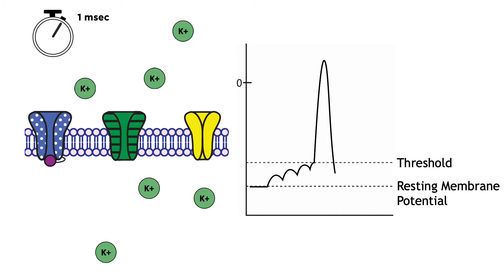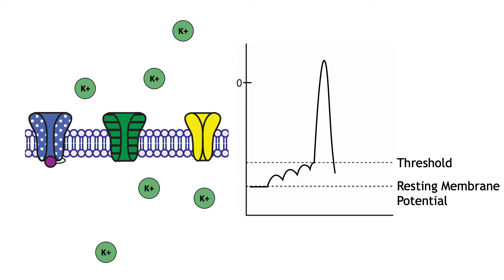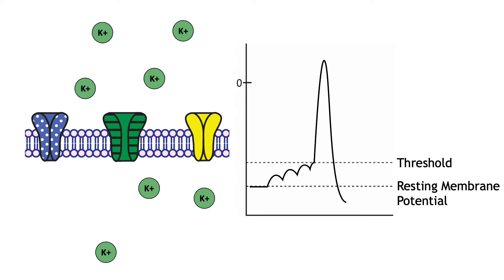Like the voltage-gated sodium channels, the voltage trigger for the potassium channel is when the cell's membrane potential reaches threshold. The difference is that sodium channels open immediately, whereas potassium channels open after a delay. As the membrane potential returns to resting level, the sodium channels will de-inactivate, returning to the closed position, ready to be opened by a voltage change again. The potassium channels will also close, but they remain open long enough to cause a hyperpolarizing undershoot as potassium continues to move towards its equilibrium potential of negative 80 millivolts.